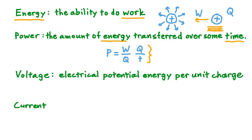Right now, this electric charge has a tendency to move, because it's in an electric field. We can say that that tendency to move — how much this charge wants to move, so to speak — is a measure of its electric potential energy. That's a lot like the gravitational potential energy of a mass in a gravitational field. This charge q has an electric potential energy, which we can refer to as EPE. If we take this electric potential energy and divide it by the amount of charge q, that fraction is equal to electric potential, or voltage.